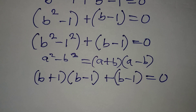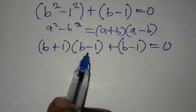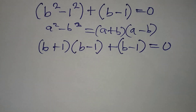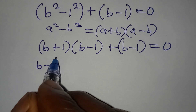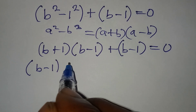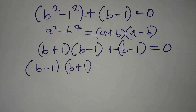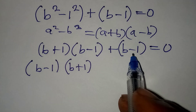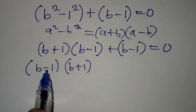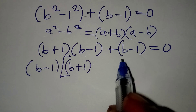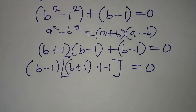Next, factor out (b − 1) since it appears in both terms. So (b − 1) comes out, and what remains inside is b plus 1 from the first group, and then since (b − 1) divided by (b − 1) gives 1, we get plus 1 from the second term, all equal to 0.